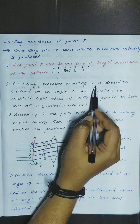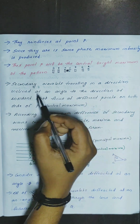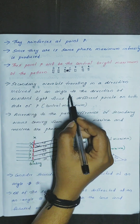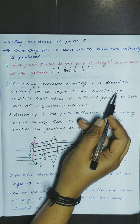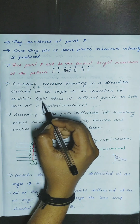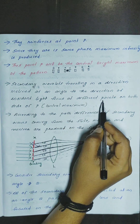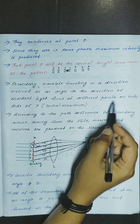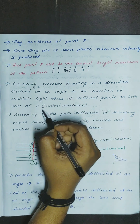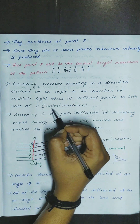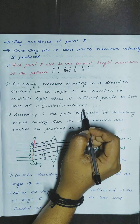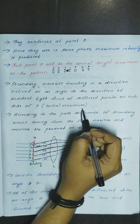Secondary wavelets traveling in a direction inclined at an angle theta to the direction of incident light focus on different points on both sides of P. P means central maximum.